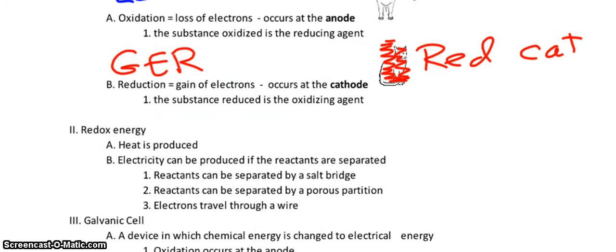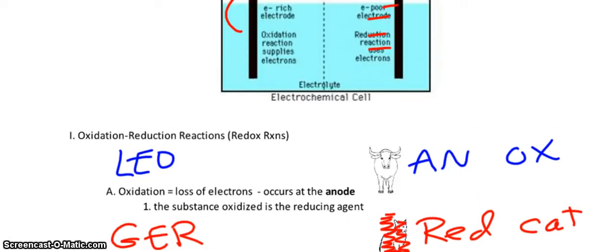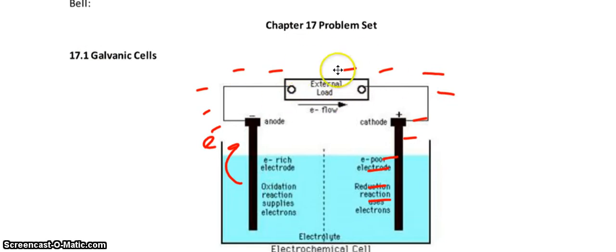Redox energy. If you ever notice that wiring can get hot, and sometimes that's how house fires can occur. So heat is produced. Electricity can be produced if the reactants are separated, typically by either a salt bridge or this porous partition. Why do we need the salt bridge? We need to separate the two out so we can harness the electricity. Redox does occur in the same beaker, but you can't get to the electricity. You can still have things be oxidized and reduced, but you can't get the electricity if they're in the same beaker.